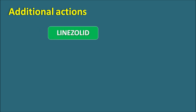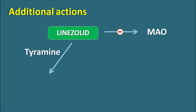Linezolid also shows additional actions not related to bacterial protein synthesis, observed within the host. Linezolid has weak MAO (monoamine oxidase) inhibitory activity. The MAO enzyme is responsible for metabolism of monoamines in food. By inhibiting MAO, Linezolid can cause drug interactions. When given with tyramine-containing food in large amounts, it can produce the 'cheese reaction' — a hypertensive crisis — due to elevated, uninhibited tyramine levels causing severe hypertension.